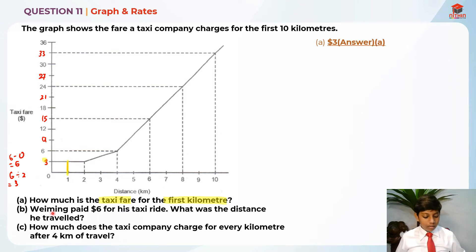Now for part B. Wei Ming paid $6 for his taxi ride. What was the distance he traveled? They're telling us that he paid $6 for a taxi ride, and they're asking what was the distance he traveled. We have to do the same thing for this question by connecting each other.